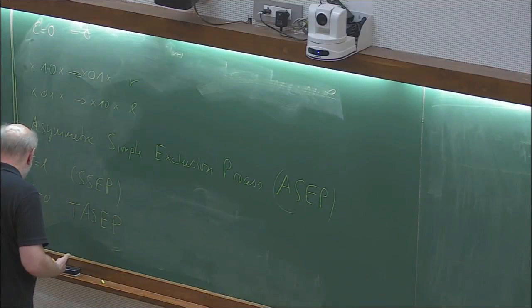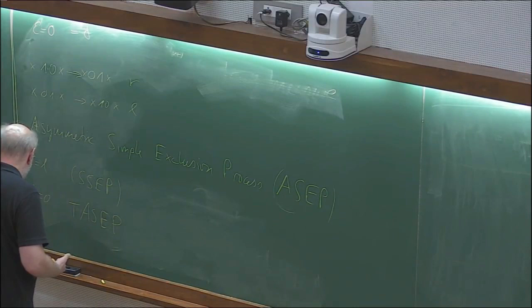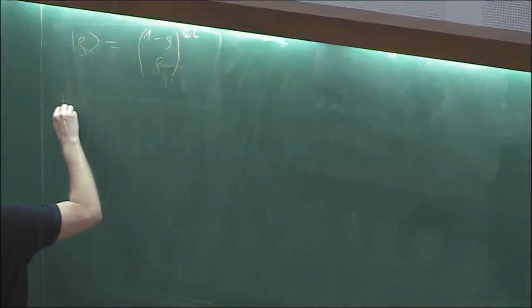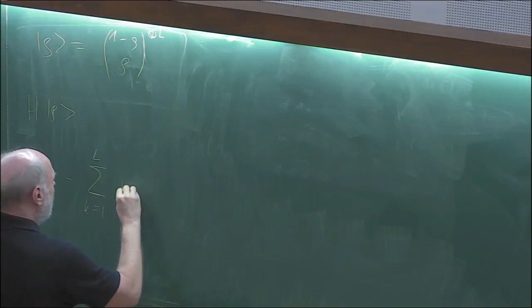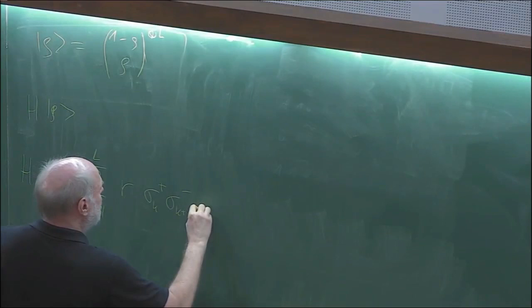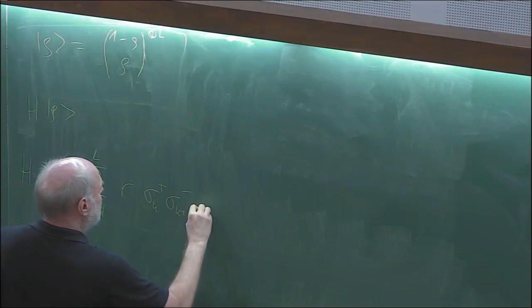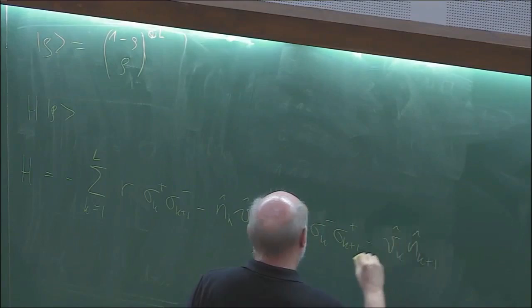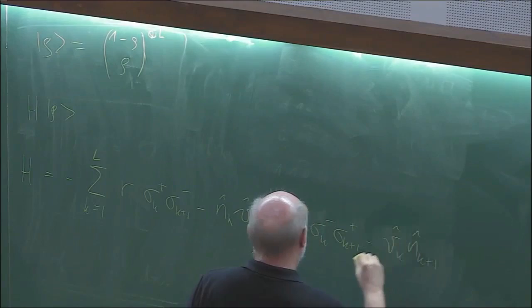We know the invariant measure; there is a family of product states. Now I really want to construct explicitly the states with a fixed particle number. We have the product state rho = (1-rho, rho)^{tensor L}, and H rho = 0. The generator H for the symmetric case with R = L = W simplifies to W/2 times sum_K [sigma_K^X sigma_{K+1}^X + sigma_K^Y sigma_{K+1}^Y + sigma_K^Z sigma_{K+1}^Z - 1].